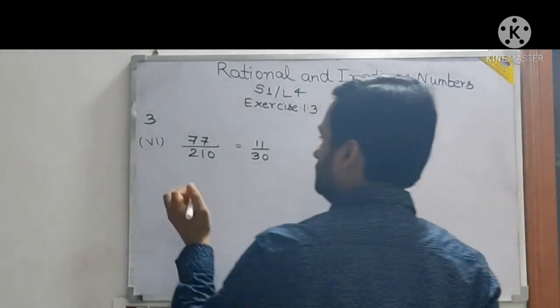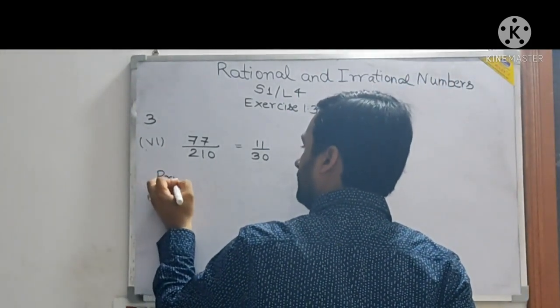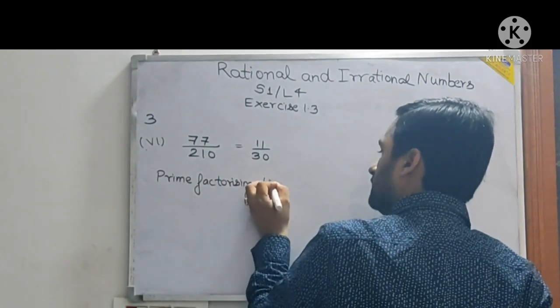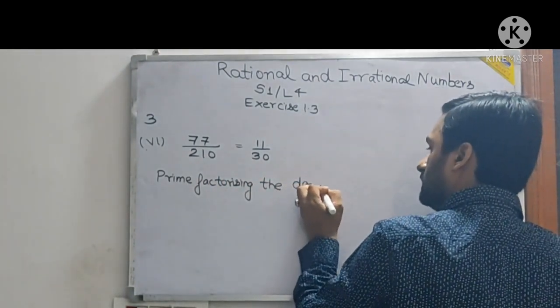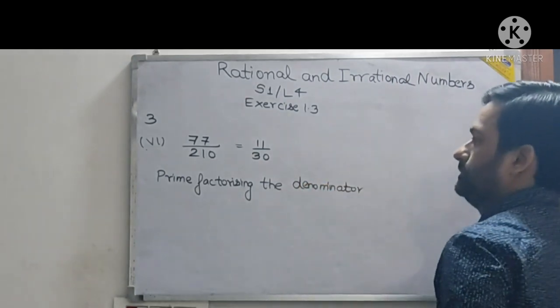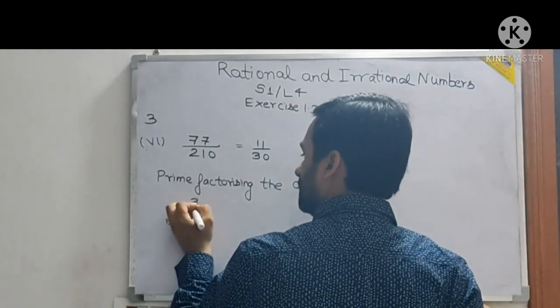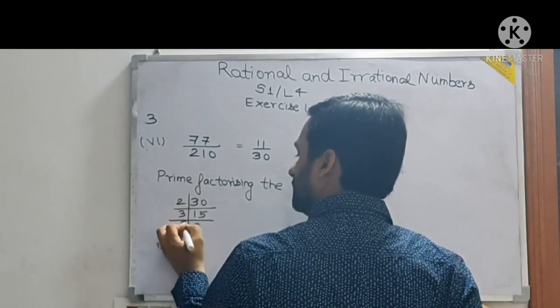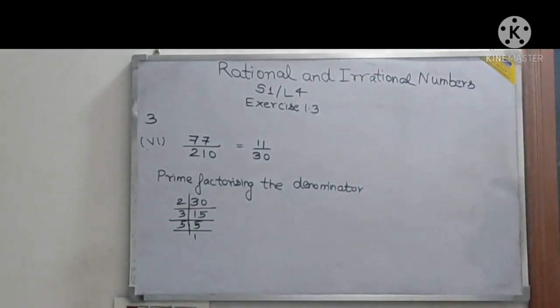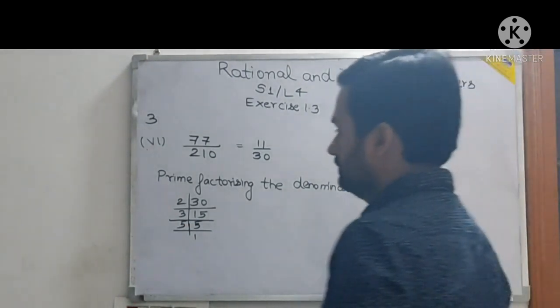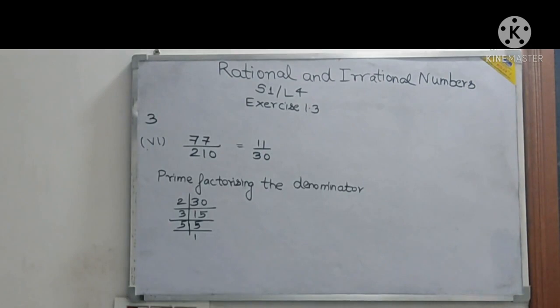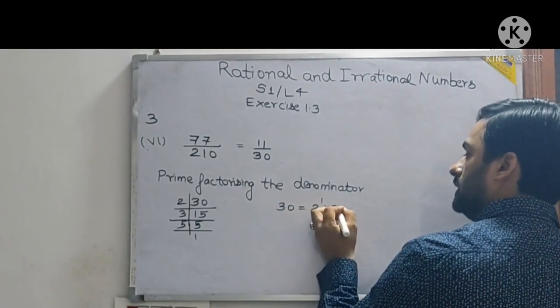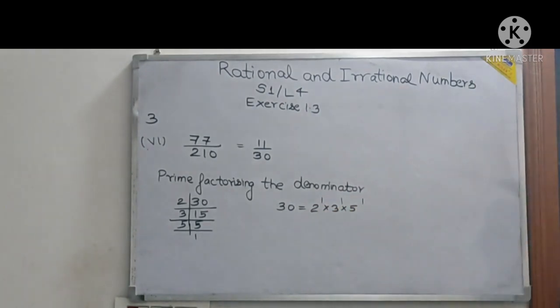Now you factorize. Write here, prime factorizing the denominator. So 30 will be what? You can show here, 30 equals 2 times 15, then 3 times 5, then 5 times 1. So 1, 3 is there, but one more number is coming here. 30 equals 2 to the power 1 into 3 to the power 1 into 5 to the power 1.